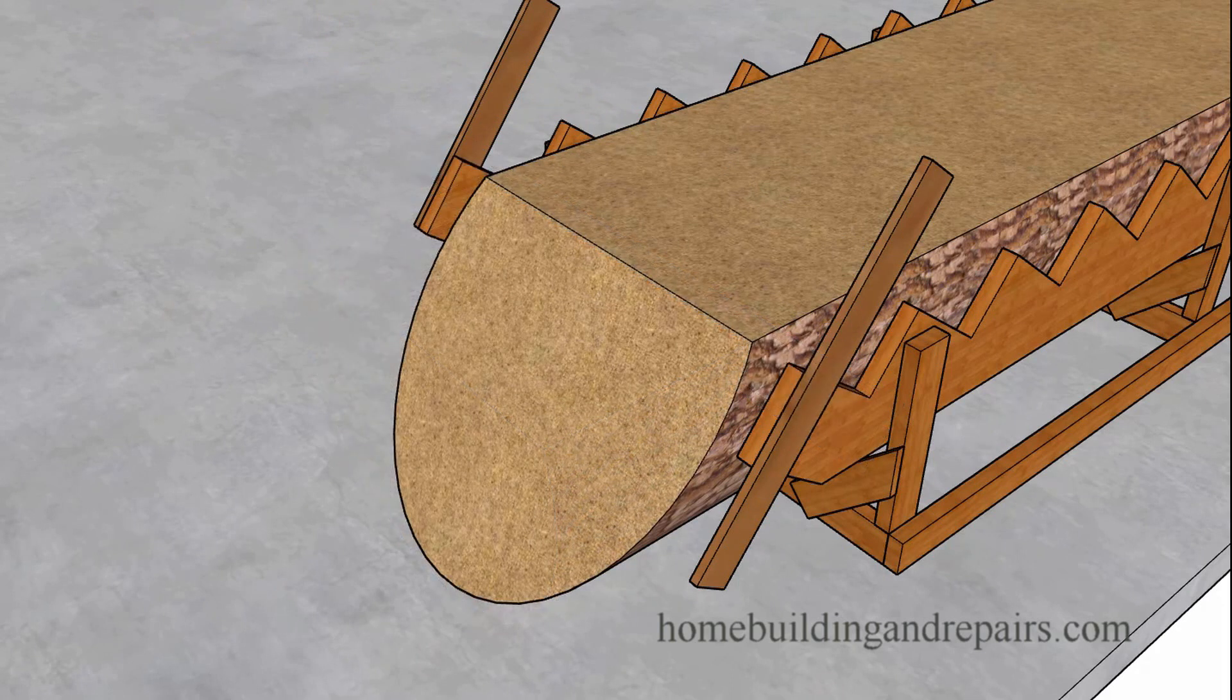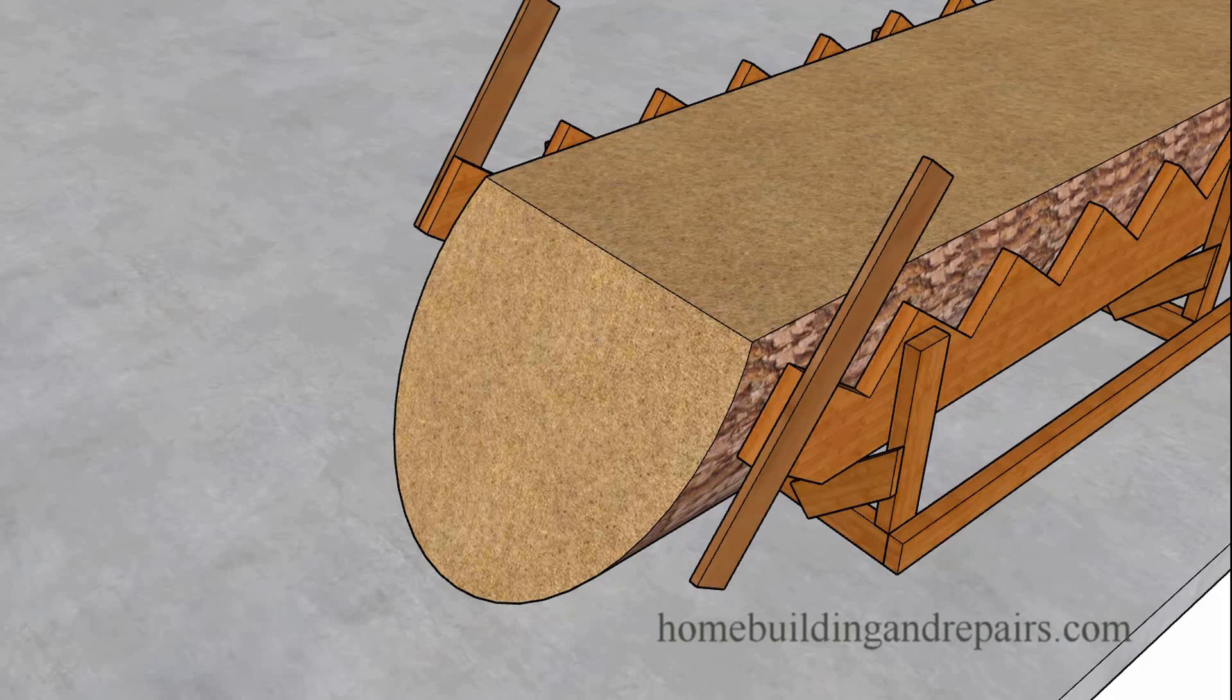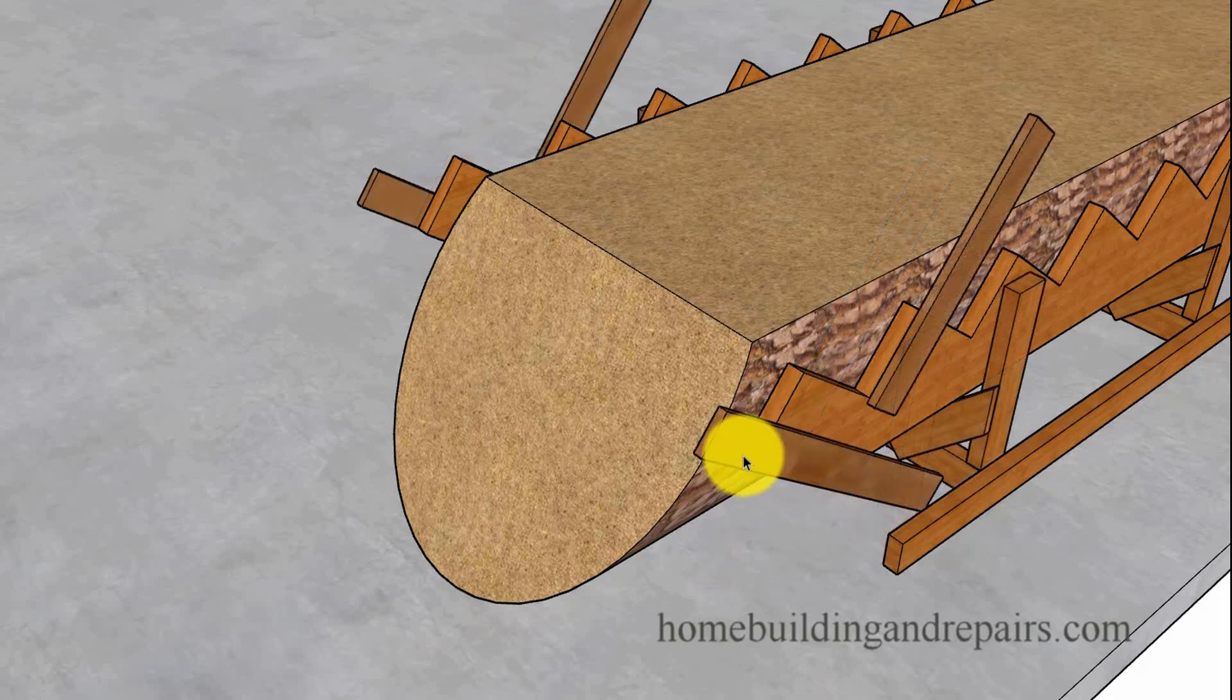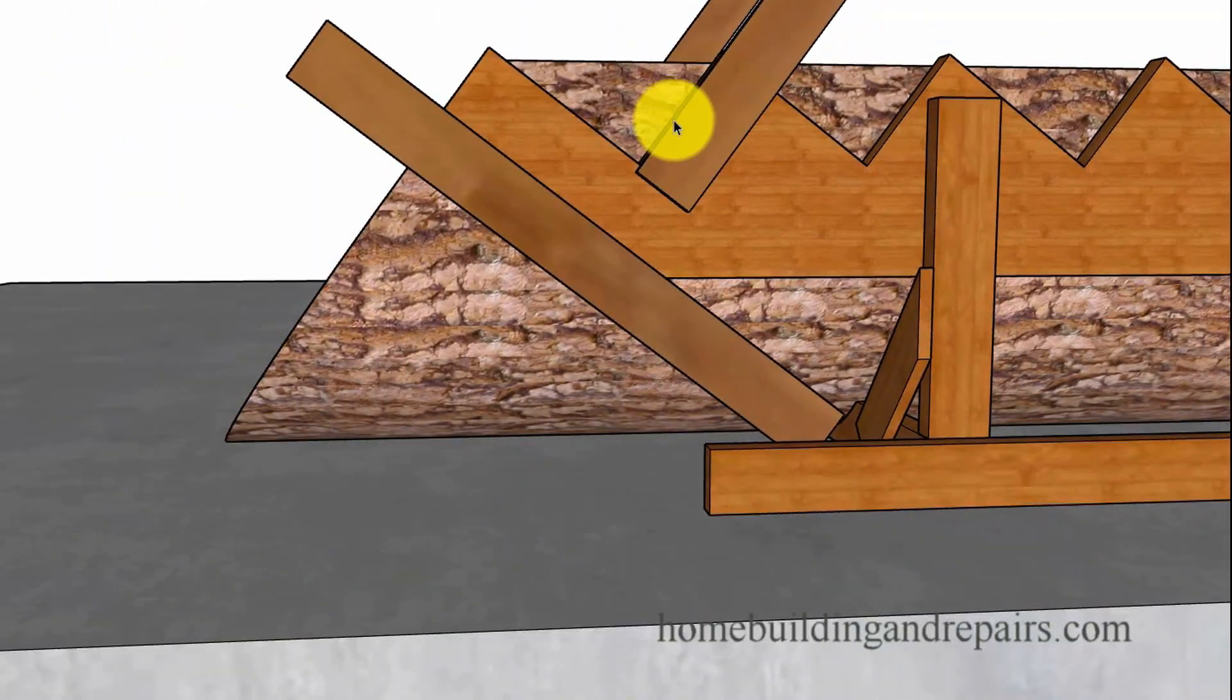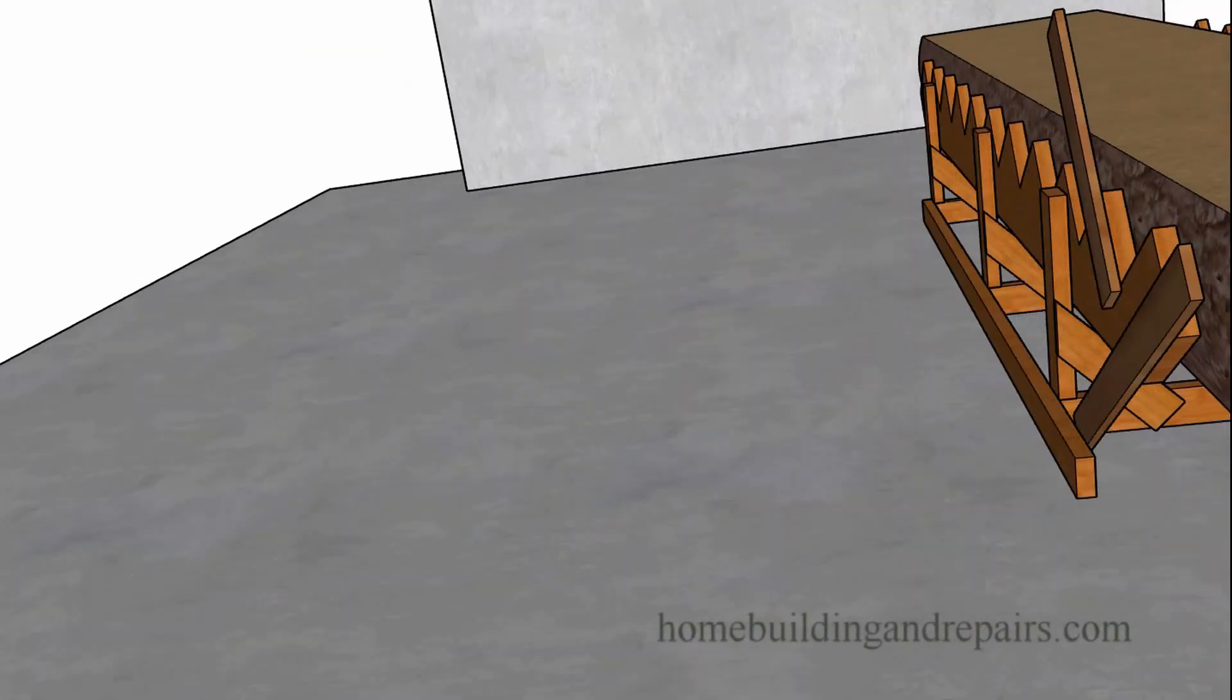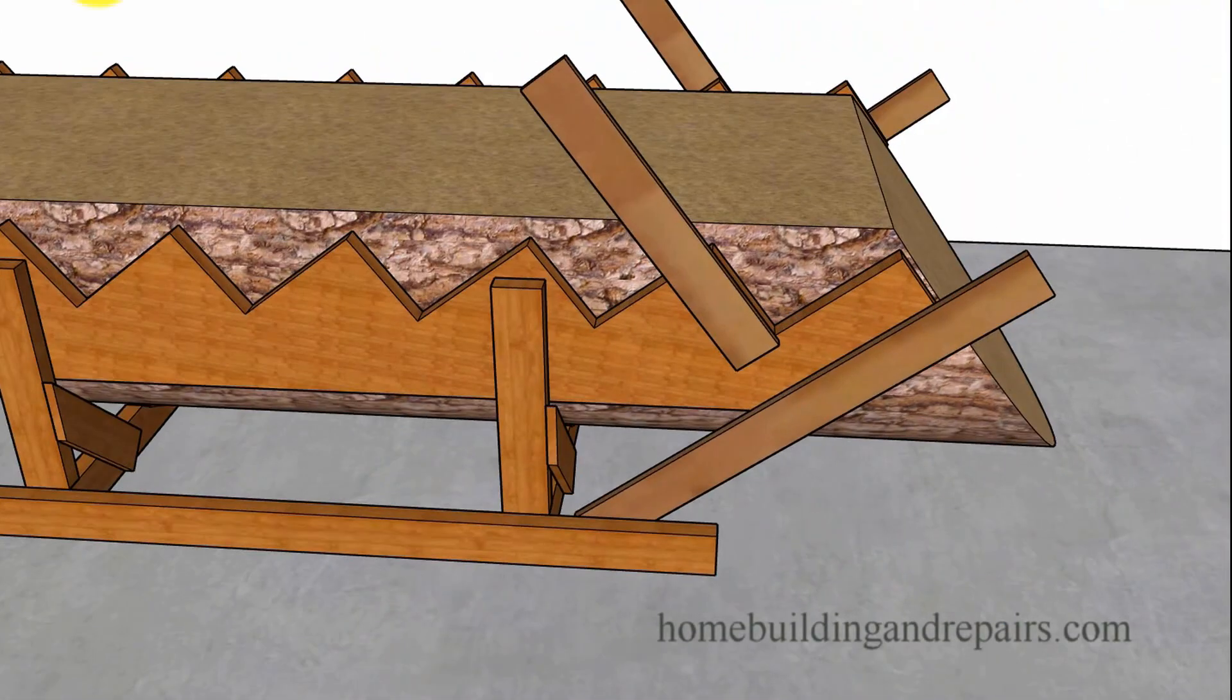You're just simply going to set the chainsaw on the guide and then plunge it into the wood. It should end up looking something like this when you're done. The next step will be to relocate your guide so that you can cut the bottom and maybe one of the risers coming up, the second riser, and do it on the other side. Make sure everything lines up.